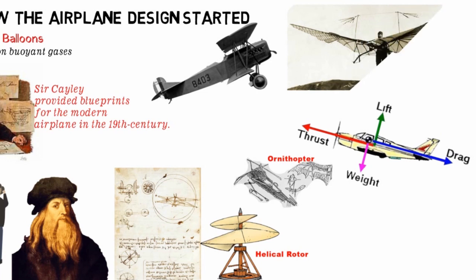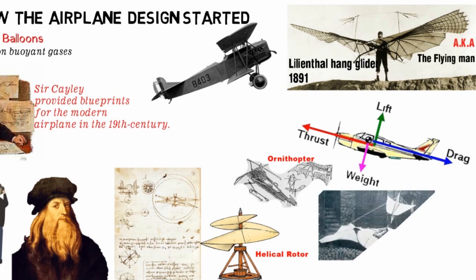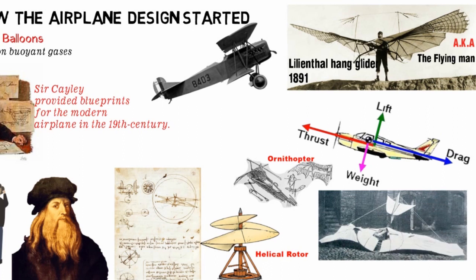German engineer Otto Lilienthal improved upon Sir Cayley's hang glider. Lilienthal started flying in 1891. His record of 2,000 experimental flights enhanced the possibility of manned flight and earned him the nickname 'the Flying Man,' until 1896, when Lilienthal lost control of his glider during one of his flights and plunged to his death.